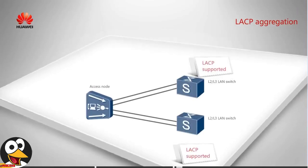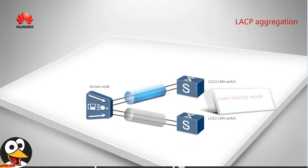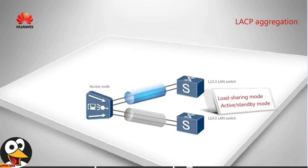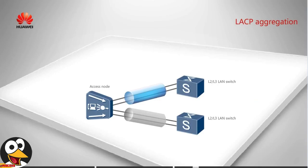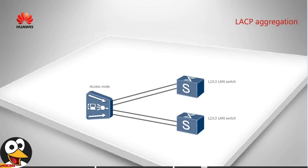If the upper layer device supports LACP and the links are required to work in load sharing or active standby mode, LACP aggregation is recommended. In LACP aggregation, the load sharing mode applies when the access device is single-homed to an upper layer device, while the active standby mode applies when the access device is dual-homed to two upper layer devices. In the dual homing scenario, uplinks are protected at equipment level at the convergence layer, providing better protection than single homing. Load sharing in LACP aggregation is configured in a similar way to manual aggregation.